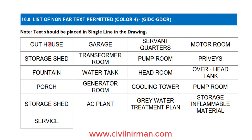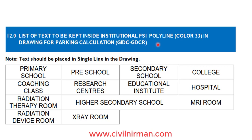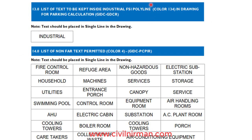An important note: text should be placed in a single line in the drawing. Items like fountain, porch, storage, AC plant should all be in color number 4. The list of text to be kept inside the commercial FSI polyline uses color index number 6. For parking calculation, the list of text is specified with color number 33 in the polyline category. For industrial FSI polyline, only a single text is specified. The list of non-FAR text permitted also uses color code number 4.